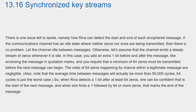There is one issue left to tackle: namely, how Reva can detect the start and end of each enciphered message. If the communications channel has an idle state where neither zeros nor ones are being transmitted, then there is no problem — let the channel idle between messages. Otherwise, assume that the channel emits a steady stream of zeros whenever it is idle. In this case, you add an extra one bit before and after the message — like enclosing the message in quotation marks — and you require that a minimum of 64 zeros must be transmitted before the next message can begin.